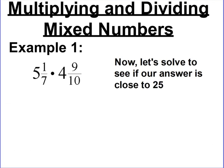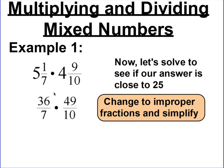Now let's do our multiplying to see if our answer actually does come close to 25. First, change into improper fractions. I did 7 times 5 plus 1, that's 35 plus 1, or 36 over 7. And 4 times 10, which is 40, plus 9 more, which is 49 — so 49 over 10. Now that we have our improper fractions, we can do everything we've previously been doing with multiplying.